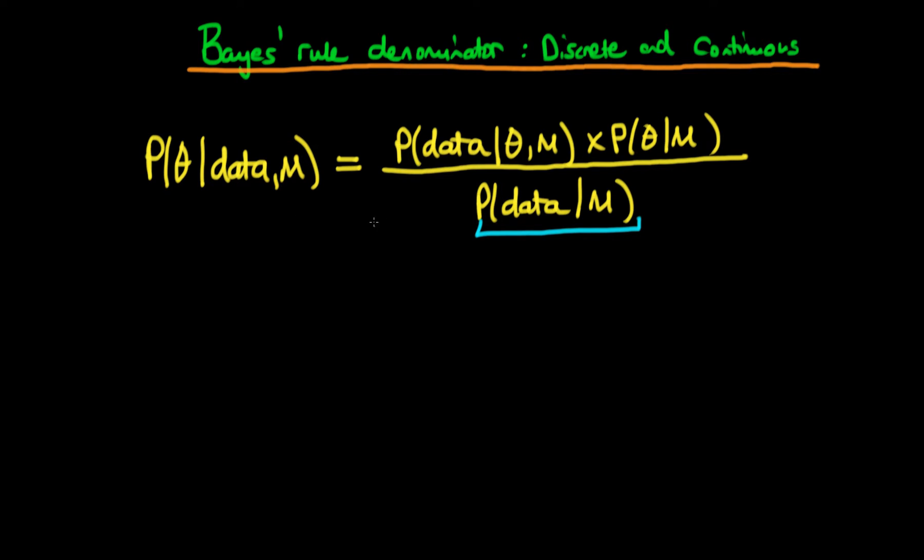Okay, the way in which we can calculate the denominator here is by recognizing the relationship between the numerator, or the first part of the numerator here, and the denominator. If we write out both terms and compare them,